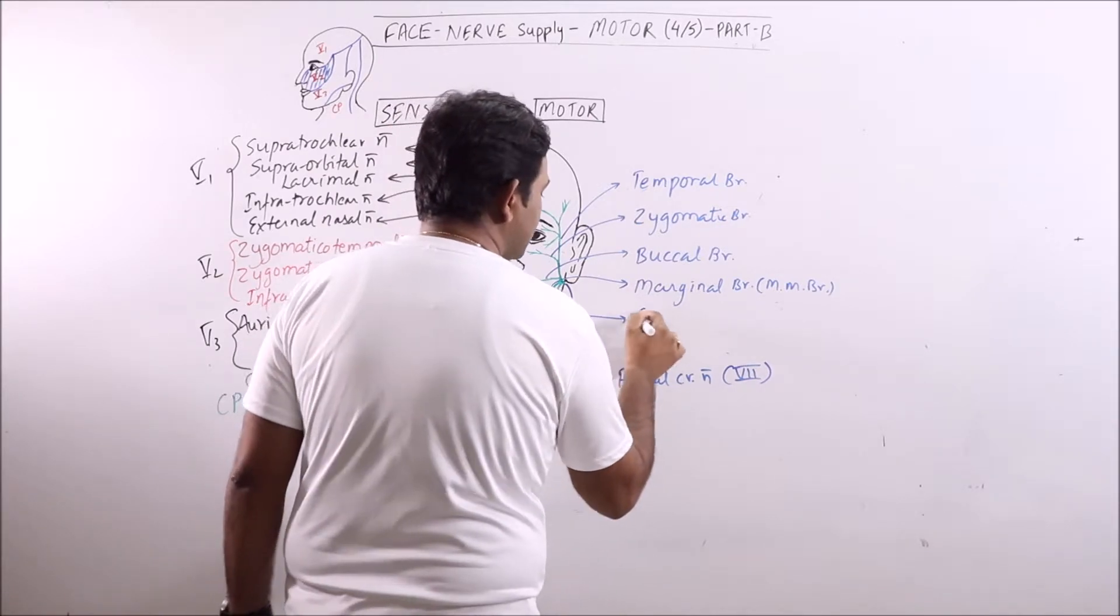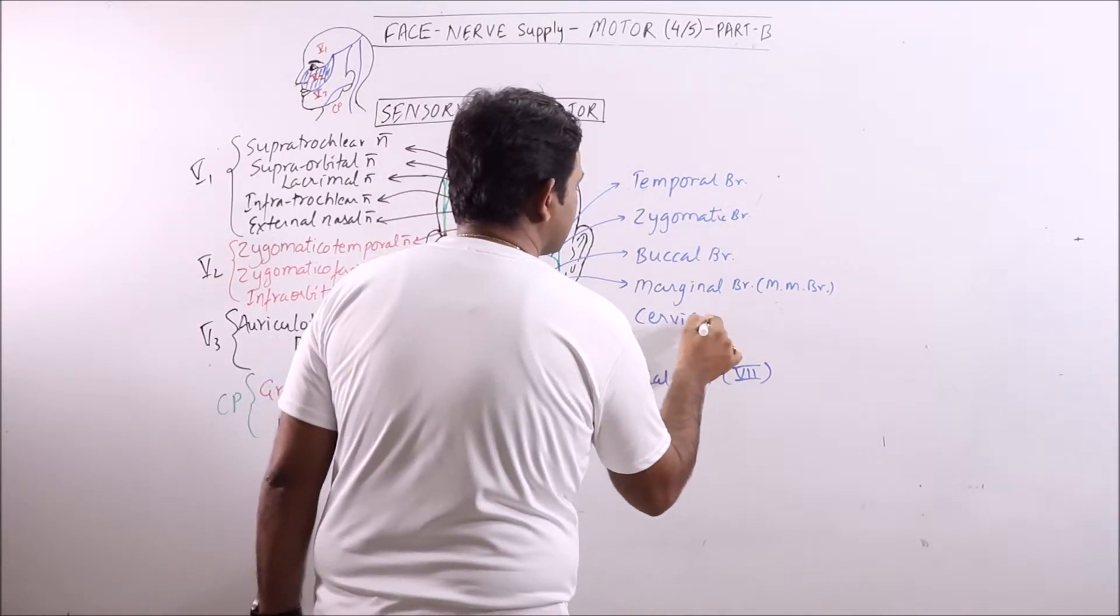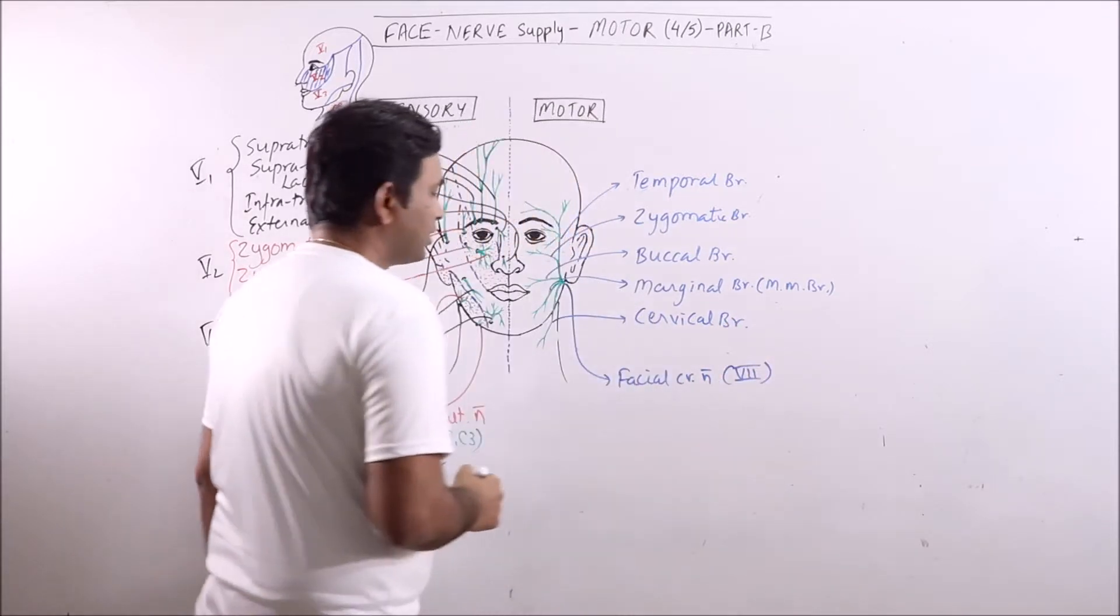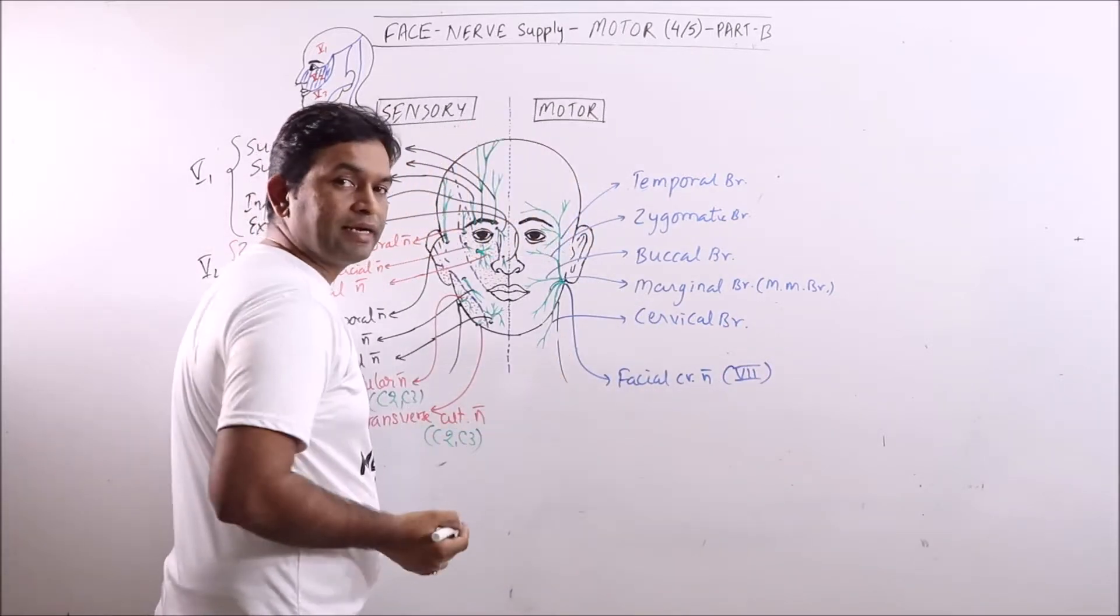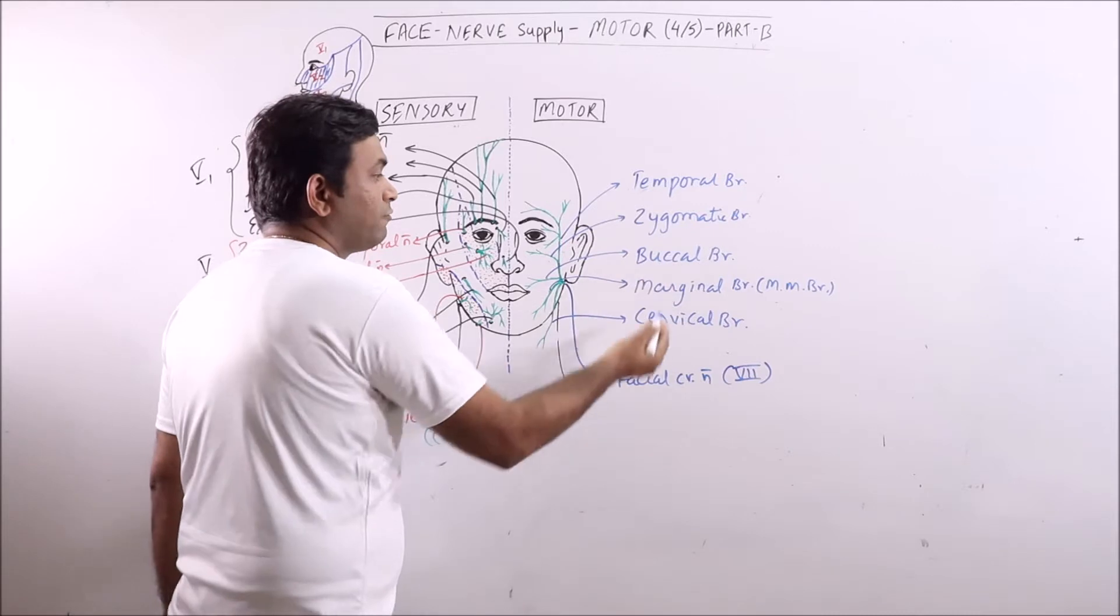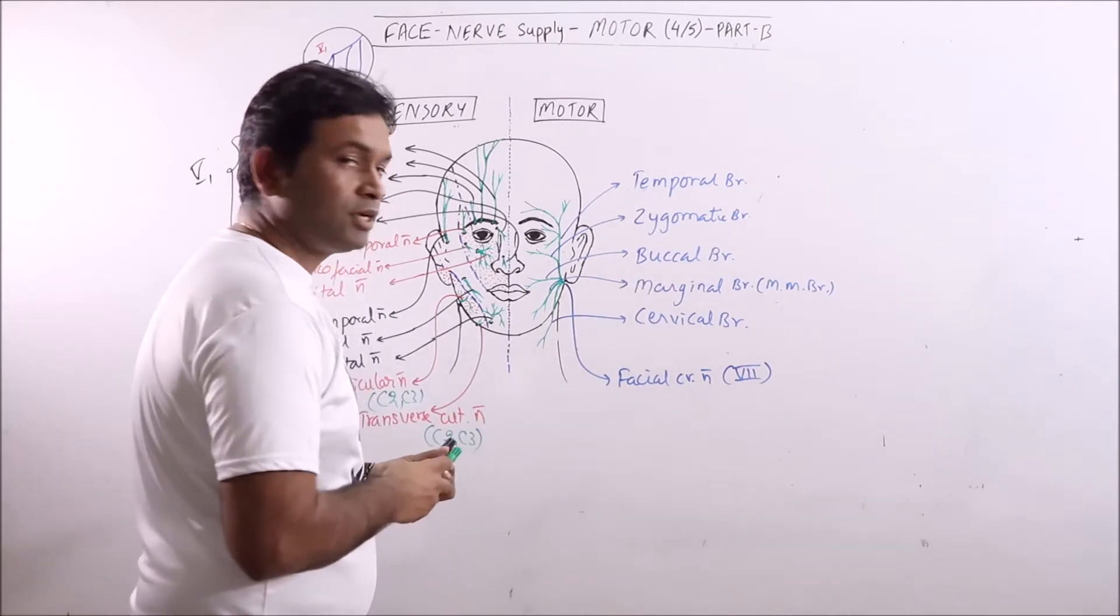And this one is the cervical branch. Cervical branch supplies the platysma muscle. So these are the 5 major branches of the facial cranial nerve.